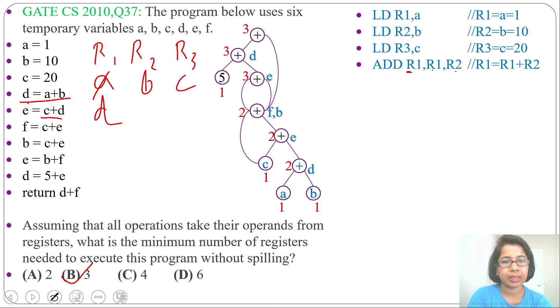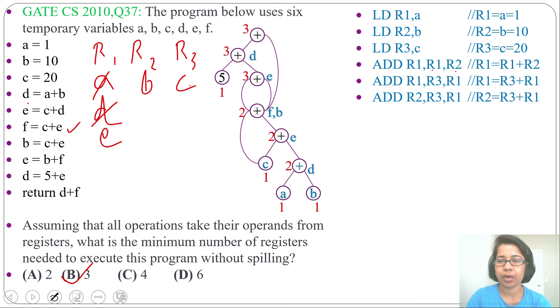Next we will do C plus D. C is in register, D is in register. So add R1, R3, R1. R3 contains C. R1 contains D. So C plus D. E will be in R1. Now R1 will contain E. Next we will do for this statement F equal to C plus E. C is in R3, E is in R1. So write down add R2, R3, R1. Now R2 contains F. Next statement is also same. B equal to C plus E. It's like copy statement. We can write F equal to B. So add R2, R3, R1. Or simply on register descriptor you can write B. Now R2 will contain F and B.